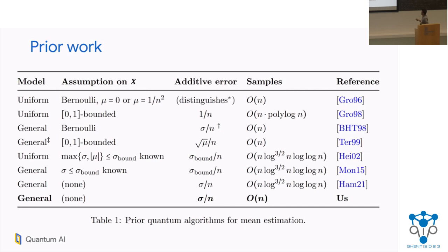The most relevant prior work to compare with: the mean estimation task as we formulated it was first done by Ashley Montanaro. Compared to our work, his work has two differences: he needs to know an upper bound on the standard deviation, and the algorithm is suboptimal in terms of sample complexity — it has a bunch of log factors. A later work by Hamoudi removed the restriction of needing to know the upper bound, but it still had the log factors. Our algorithm removes both.